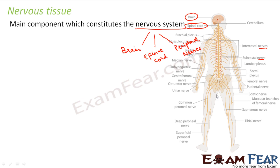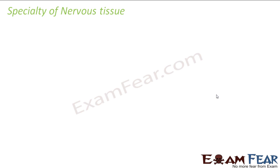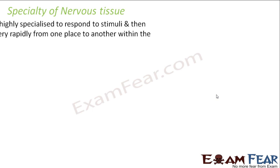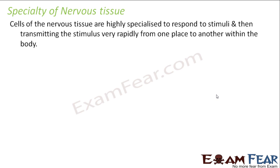What is the speciality of nervous tissue? Unlike muscular tissue — which contained special contractile proteins enabling movement — the nervous tissue is able to react to situations very fast. The cells of the nervous tissue are highly specialized to respond to stimuli and then transmit that stimulus very rapidly from one place to another within the body.